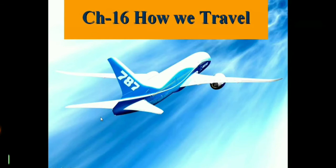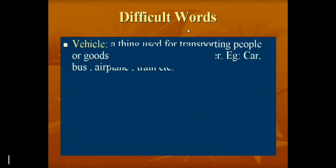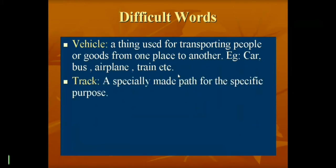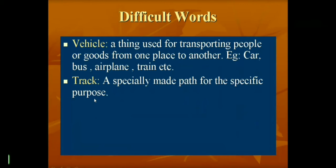Let's start Chapter 16: How We Travel. Before starting the chapter, let's learn some difficult words. Our first word is 'vehicle' — a thing used for transporting people or goods from one place to another. Examples are car, bus, airplane, train, etc. Next is 'track' — a specially made path for a specific purpose.